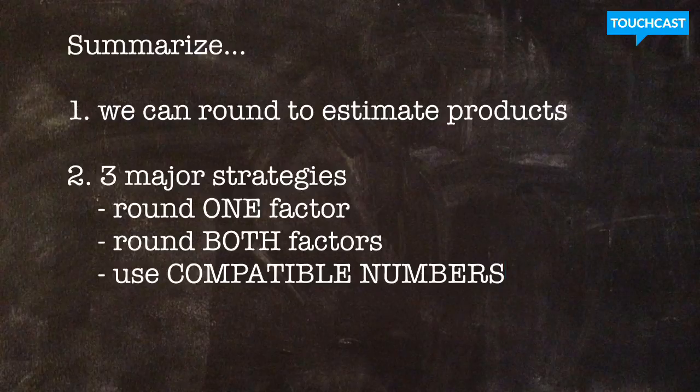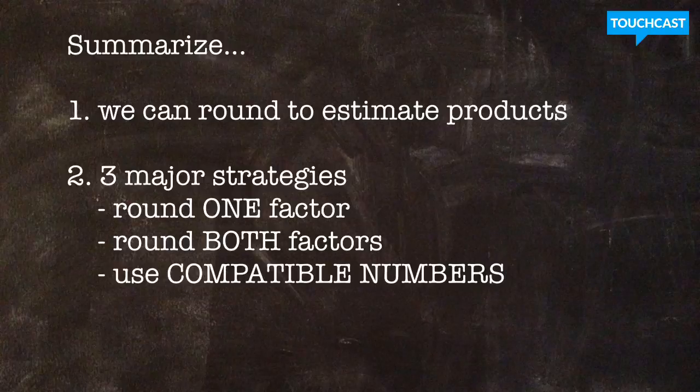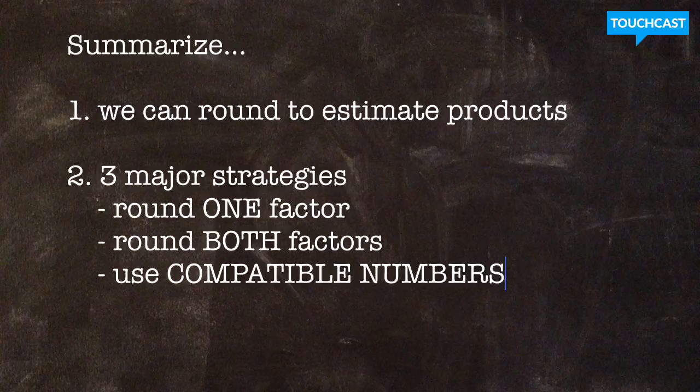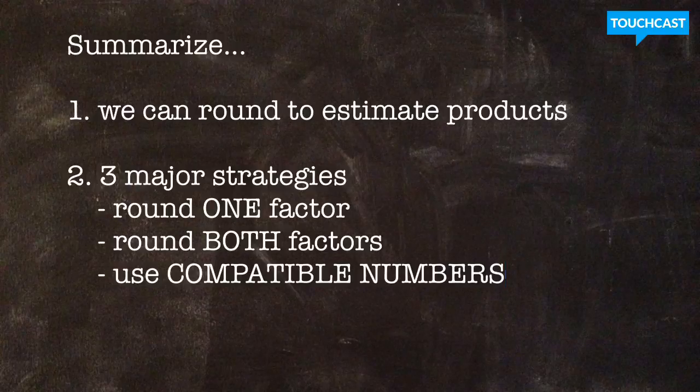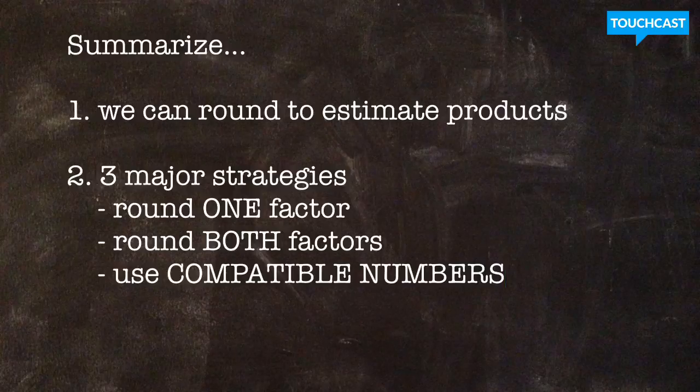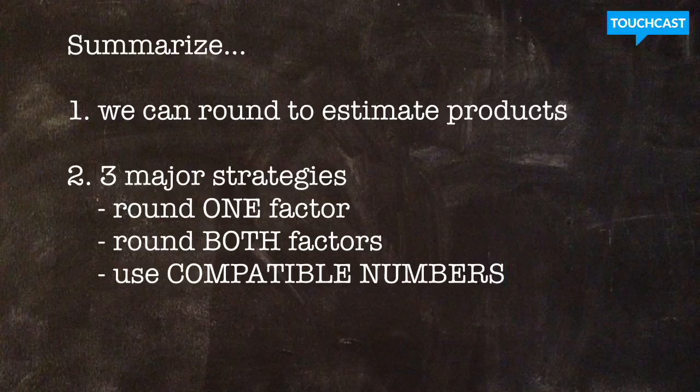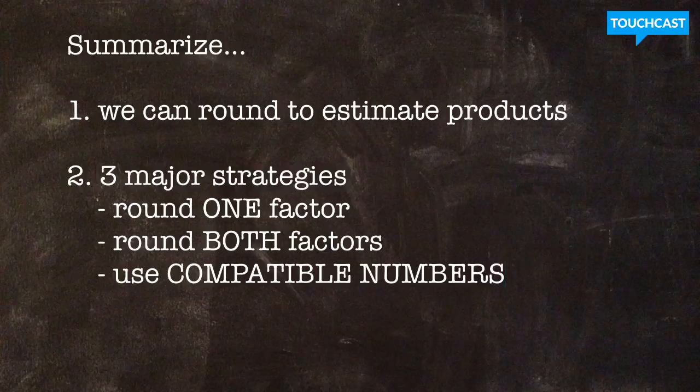So, to summarize what we learned about today, guys, we learned that we can round to estimate the products of larger multiplication equations. We learned that there are three major strategies that we can utilize when estimating products of multiplication equations. We can round one factor, we can round both factors, or we can round to create compatible numbers. The point is, any one of those three strategies is going to help us get to a place where we can look at a larger multiplication equation and estimate what the product will be.